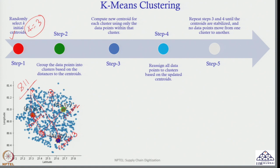For example, point A seems to be close to centroid 1, so I find the distance A to centroid 1, A to centroid 2, A to centroid 3. Since A to centroid 1 is least, A will be allocated to centroid 1. For point B, let us assume B is closest to centroid 3, so B will be allocated to cluster 3. Similarly, C will be allocated to cluster 2. For each point, find the distance to all 3 centroids and allocate to the minimum.